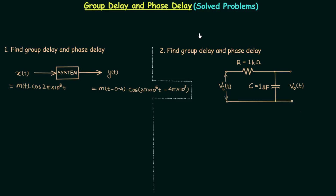In the last lecture I explained two types of delays. The first one was group delay and the second one was phase delay. Now in this presentation we will solve two problems which you can see on your screen. In both problems we are required to calculate the group delay and the phase delay, and you are expected to know the formulas. If you don't know the formula, I will first write down the formulas of group delay and phase delay.